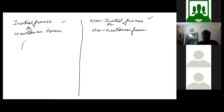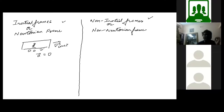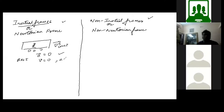Let us understand the Inertial Frame. Suppose you are moving in a bus and the bus is moving at a constant velocity - that means the acceleration should be zero. Such frames which are either moving with a constant velocity or with zero acceleration are known as the Inertial Frame. A body which is at rest can also be counted in the Inertial Frame - it will have zero velocity and zero acceleration. To repeat: all those frames of reference which are moving with a constant velocity, with zero acceleration, or either at rest, are known as the Inertial or the Newtonian Frame of Reference.